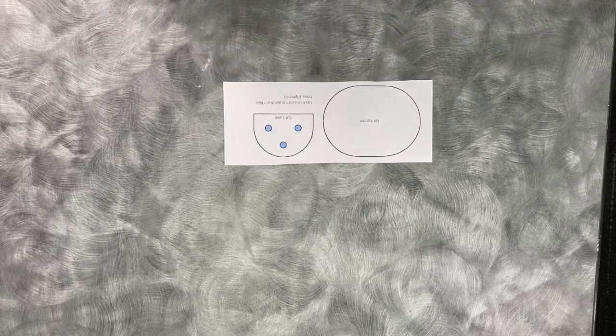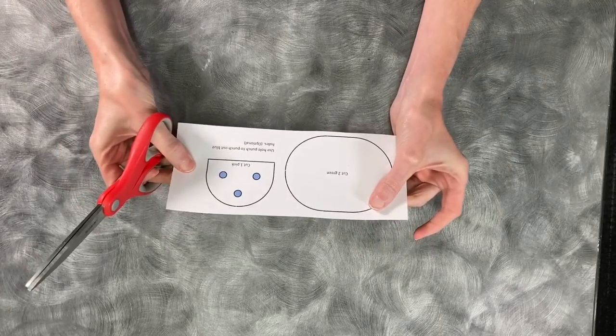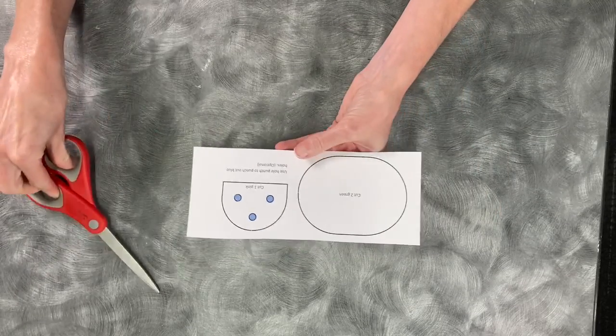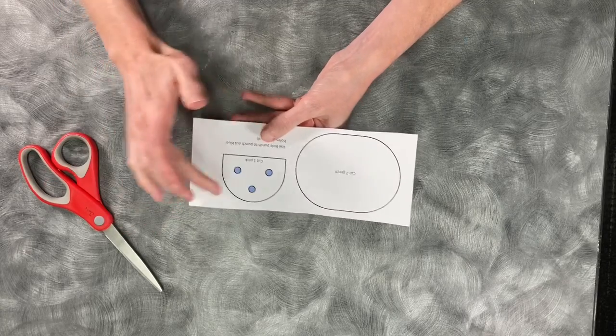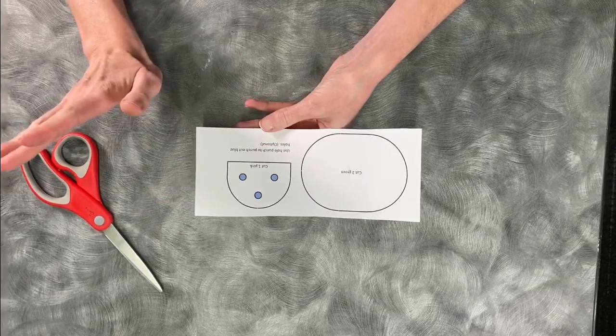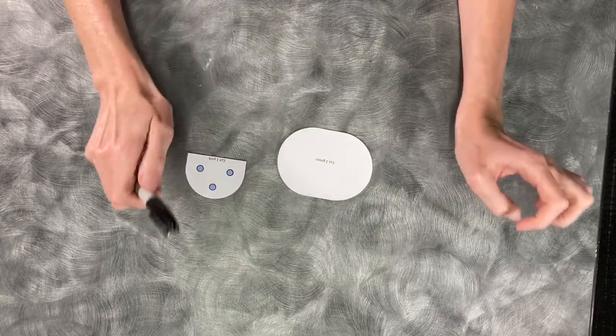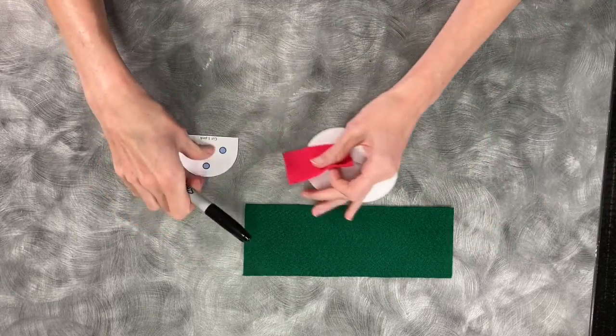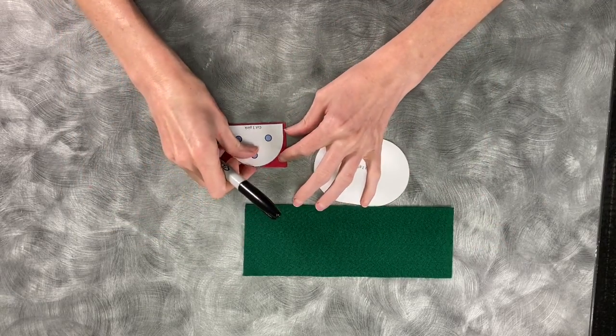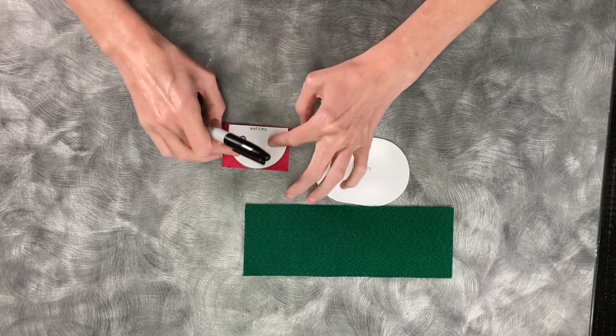Alright, so to start out we are going to first cut out the template right here. One of the things you want to do is on this one with the three blue circles don't cut out the circles. We'll deal with that later. And voila we have them cut and we will grab our felt. The easy one is going to be this pink one right here.